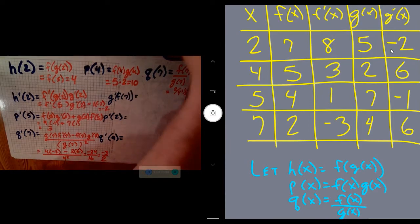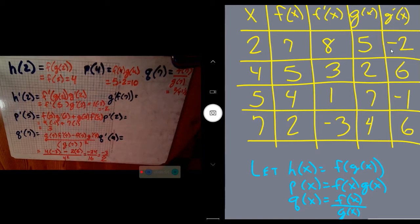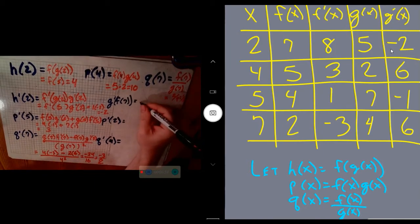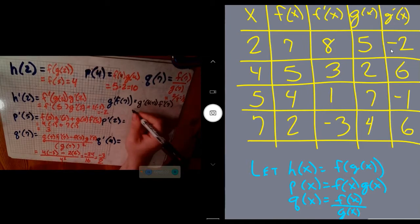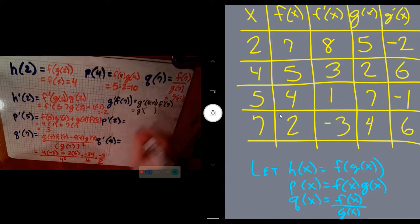Now, this one on the right is a little bit different because we're going in the opposite order. Instead of h being f(g(x)), they're going the other way around: g(f(x)). It's the same idea. Derivative of the outside, keeping the inside the same, times the derivative of the inside. f(7) is 2, times f'(7). We get g'(2) is -2 again, and f'(7) is -3. So we get positive 6 as our answer.